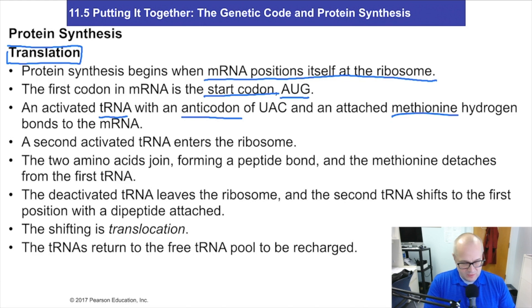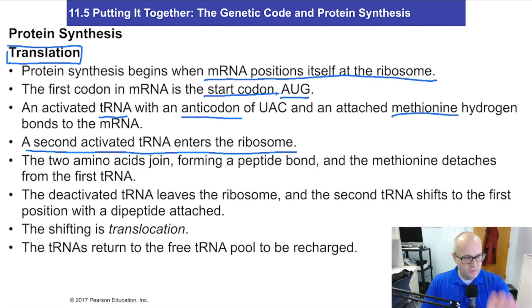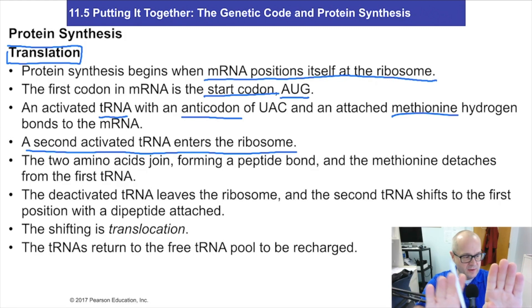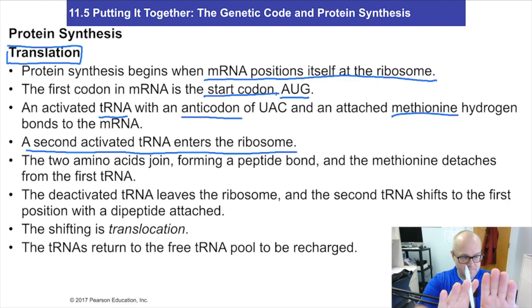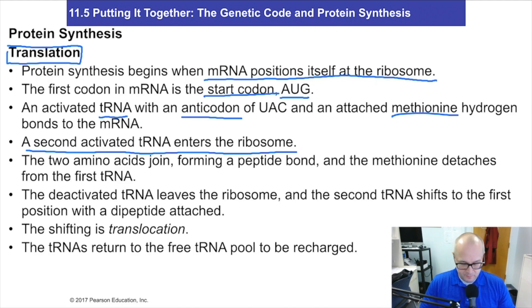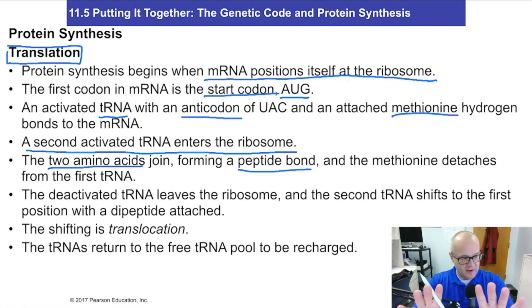Once that's occurred, a second tRNA enters the ribosome. So we have one tRNA, and now another one has come into close proximity — they're beside each other. Remember, there are amino acids on them. So now they're in close proximity, and the two amino acids are bonded together, forming the peptide bond — and that's because of the interaction between tRNA and mRNA.